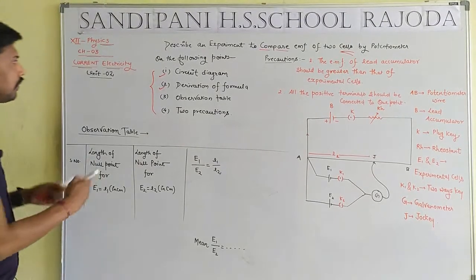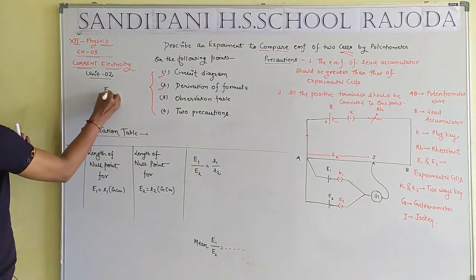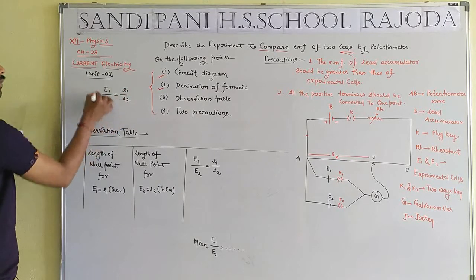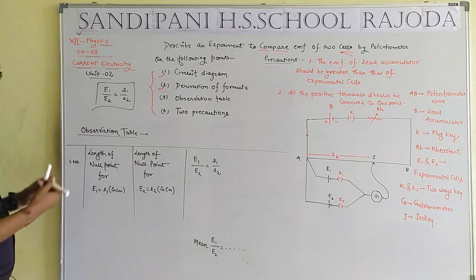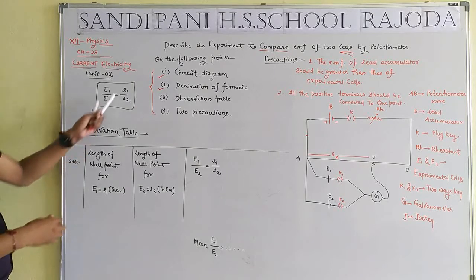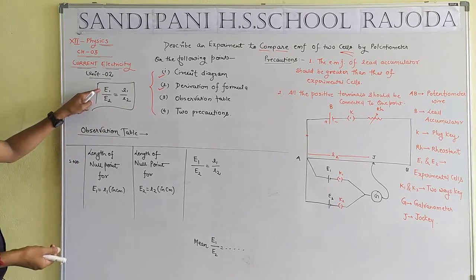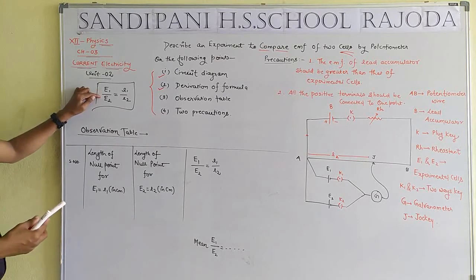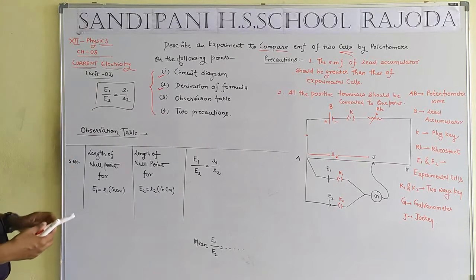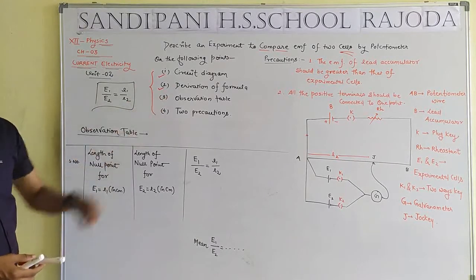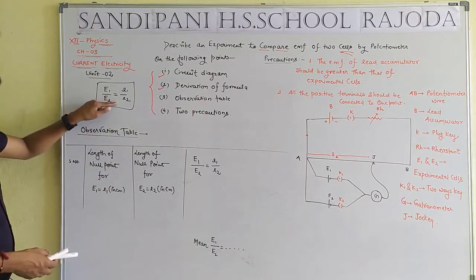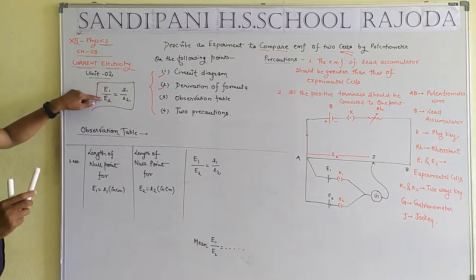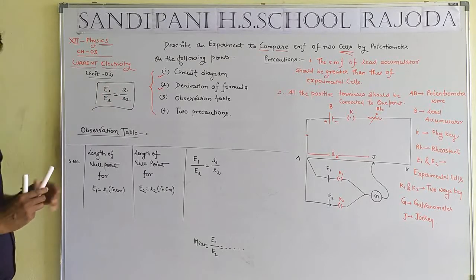We have completed the second point — derivation of the formula. The result is: E1/E2 = L1/L2. That means we need the values of L1 and L2 to determine E1/E2, thereby comparing the electromotive force of two cells by use of the potentiometer.